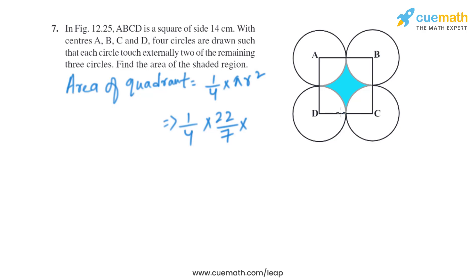On solving this, we get the area of one quadrant as 77/2 square centimeters.